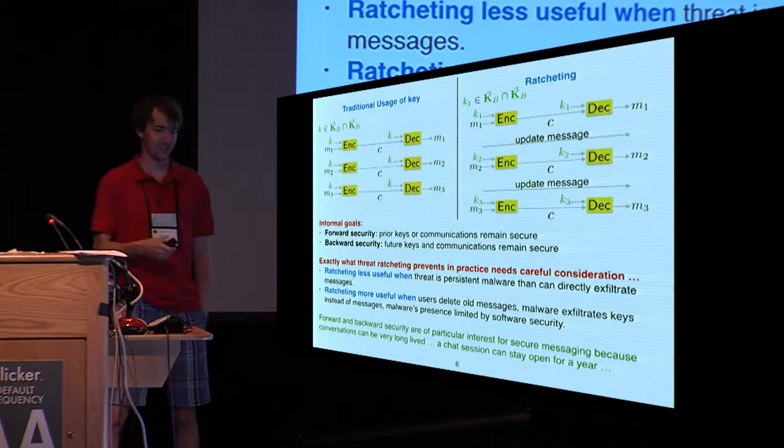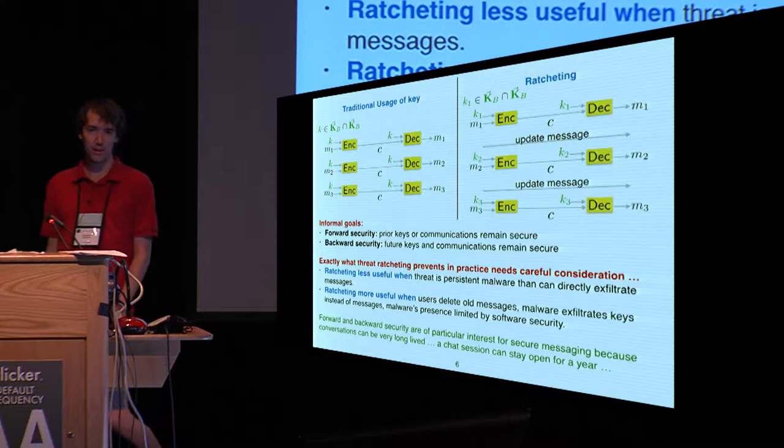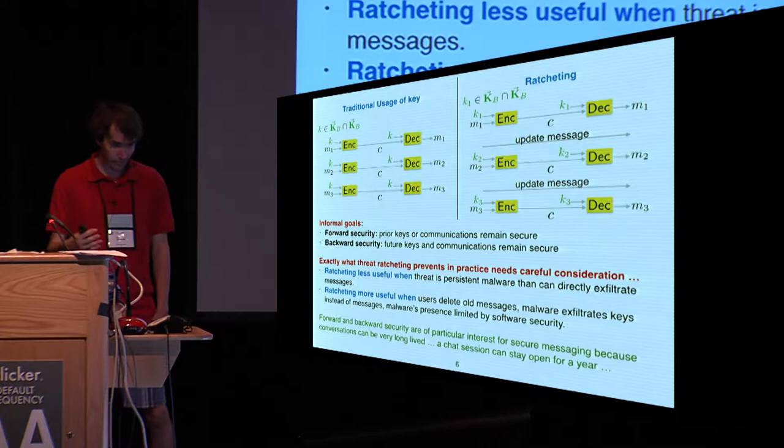Informally, the two goals here are forward security and backward security. Backward security is the one I just described. Forward security is the other direction. If somebody is able to steal K2, we want that to not help them read anything that was encrypted using K1.